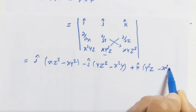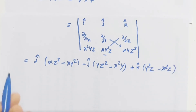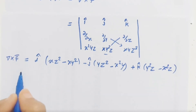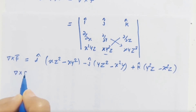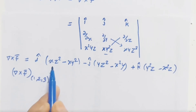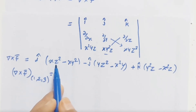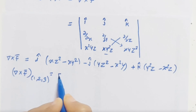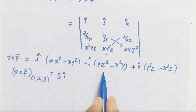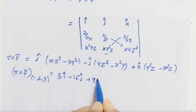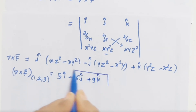Evaluating delta cross f-bar at point (1, 2, 3): the i-cap component gives 9 minus 4 = 5, so 5 i-cap. The j-cap component gives minus 16 j-cap. The k-cap component gives 9 k-cap. So curl of vector f-bar at (1, 2, 3) is 5 i-cap minus 16 j-cap plus 9 k-cap.